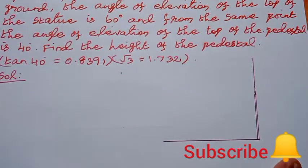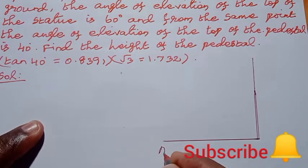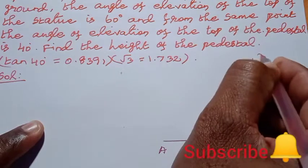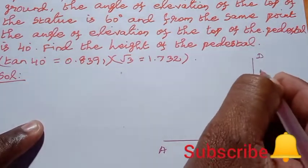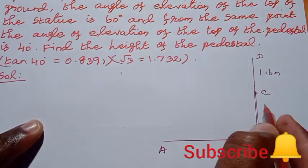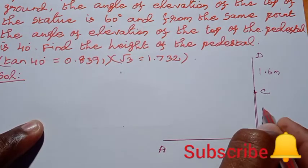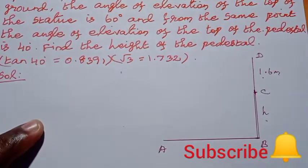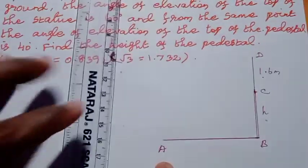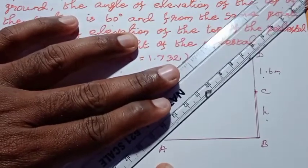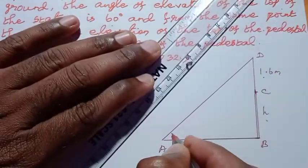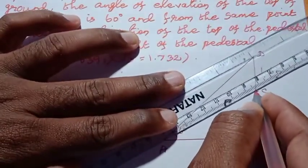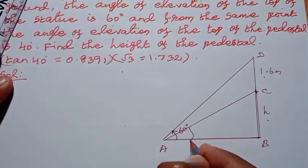If you look at the diagram, A is a point on the ground. B is on the ground. C is the end of the pedestal — the pedestal stands on the ground and the statue is on top. The statue is 1.6 meters in height. Looking from point A, the angle of elevation to the top of the statue is 60 degrees, and to the top of the pedestal is 40 degrees.